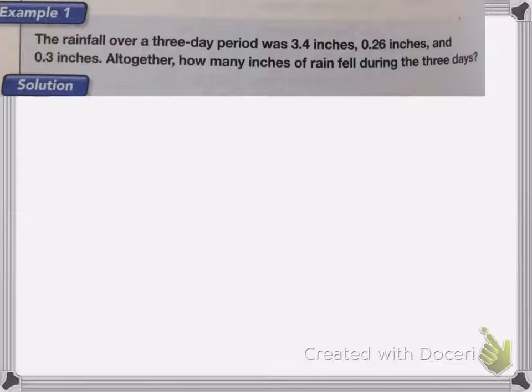So we're going to line these up, and remember when you're lining them up you need to line up the decimal point. So we have 3.4, 0.26, and 0.3.